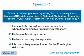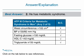Which of the following is true regarding BC's coronary heart disease risk according to NCEP ATP-3 guidelines? The best answer is 2: he has metabolic syndrome.